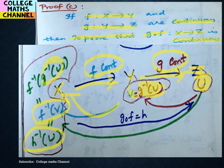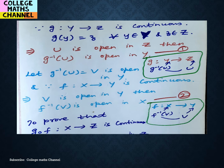So V — replace it with g-inverse of U. Then f-inverse of g-inverse of U is open in X. Now, f-inverse of g-inverse of U is h-inverse of U. So h-inverse is nothing but f-inverse composed with g-inverse. The composite function is open in X.